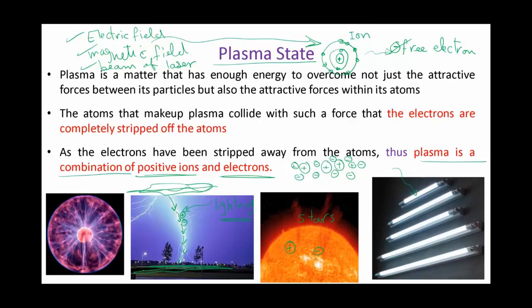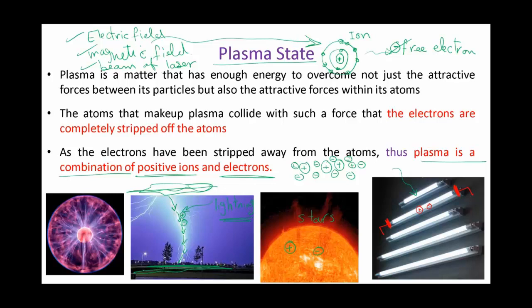Plasma can also be produced in the laboratory, like in fluorescent lamps or neon lamps. In the neon or fluorescent lamp, there is a gas inside the lamp, and we apply a certain electric field through two electrodes. This will ionize the gas in the lamp — turning it into positive ions and negative electrons — changing the gas into plasma. This is accompanied by emitting light. So usually plasma is accompanied by producing light, as seen from fluorescent lamps, lightning, and stars.